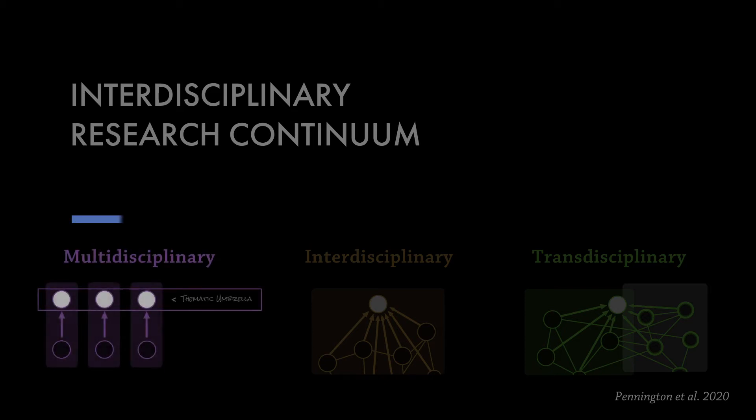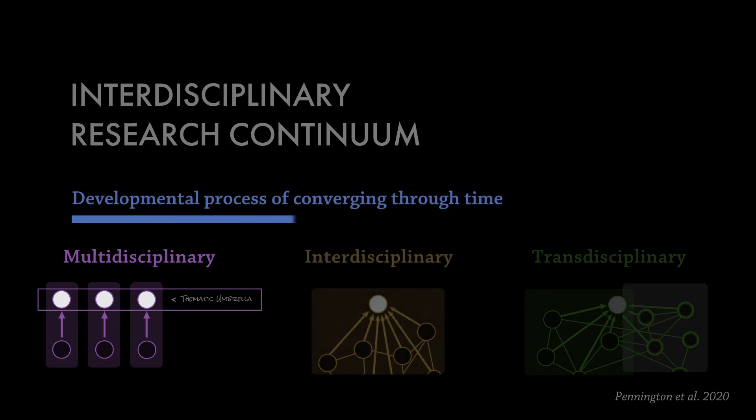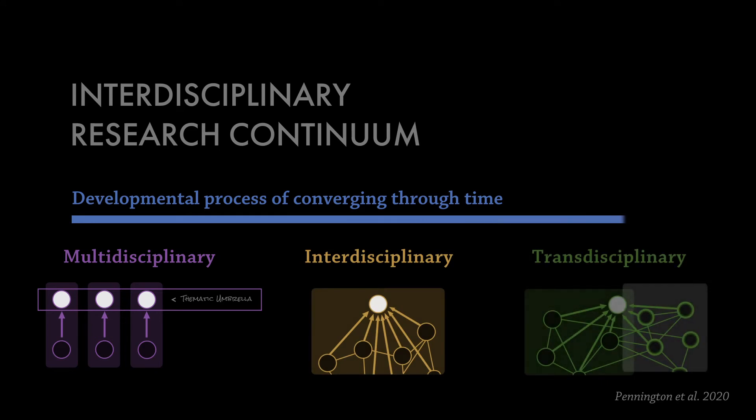You start multidisciplinary. You have to start multidisciplinary. You can't start anywhere else because you have to build those linkages that will allow you to move to interdisciplinary and then ultimately into transdisciplinary. So that's why that process point of view is really important. Even though people may come together and say, we're going to do convergent research, figuring out what that is, is half of the problem.